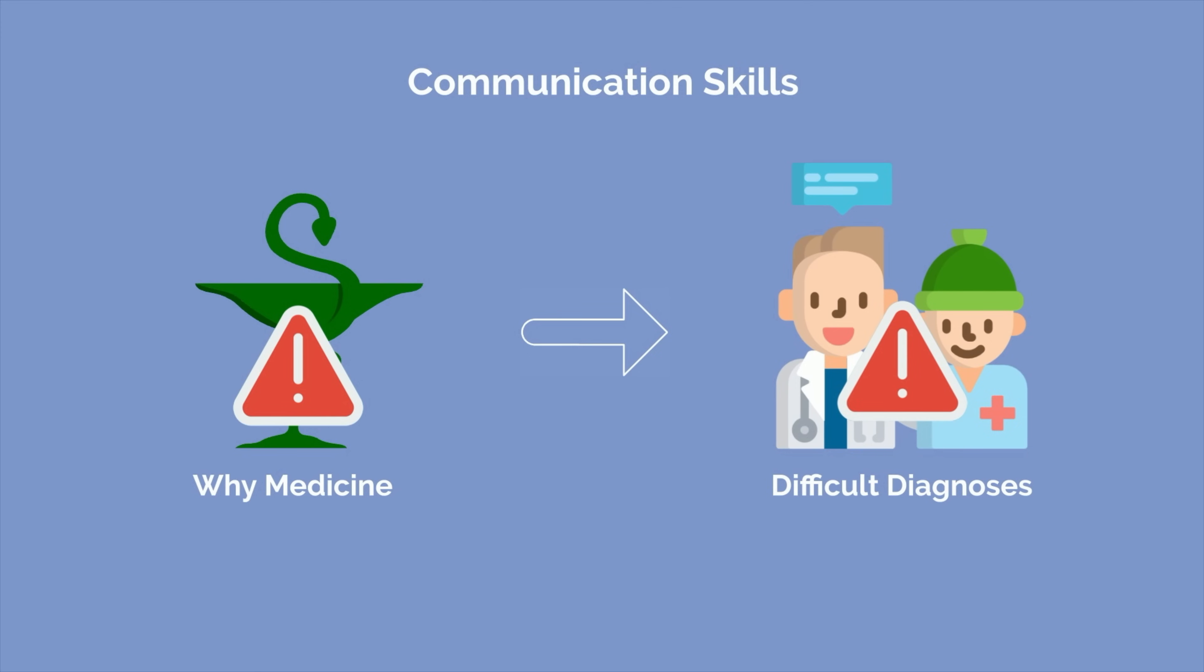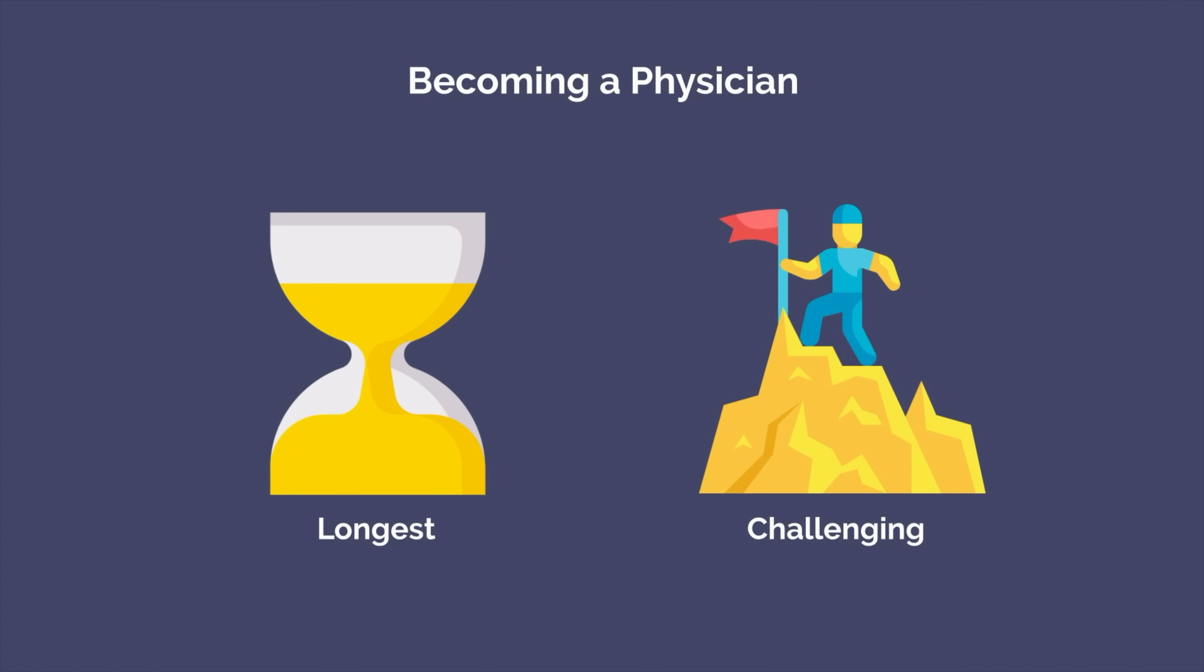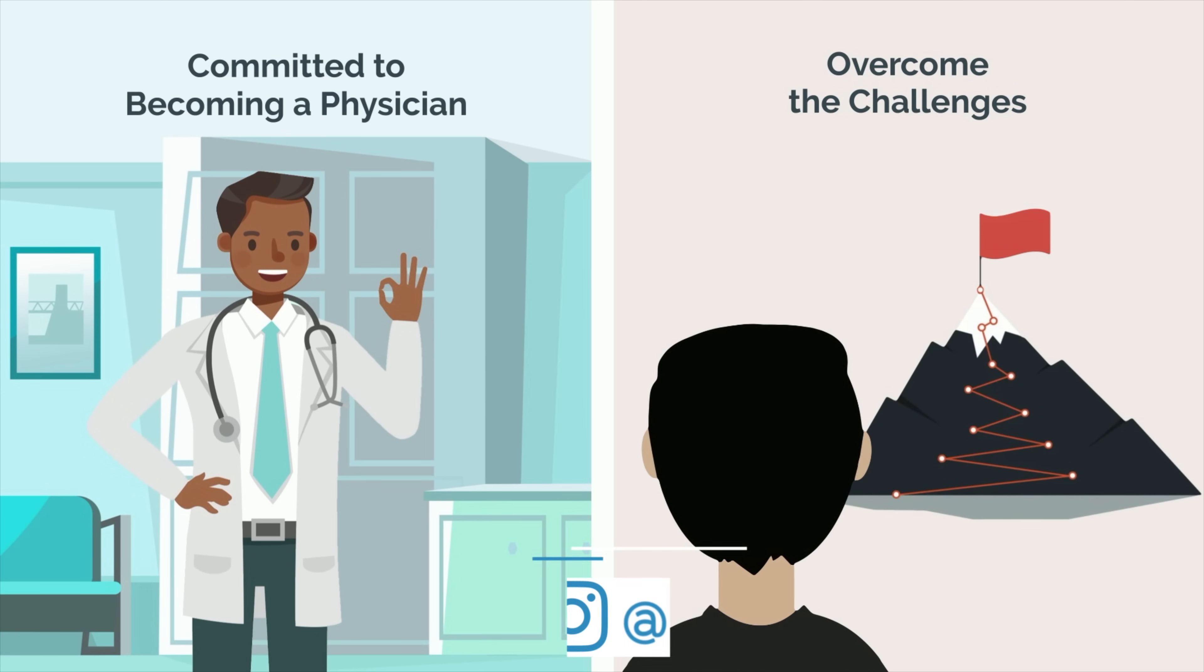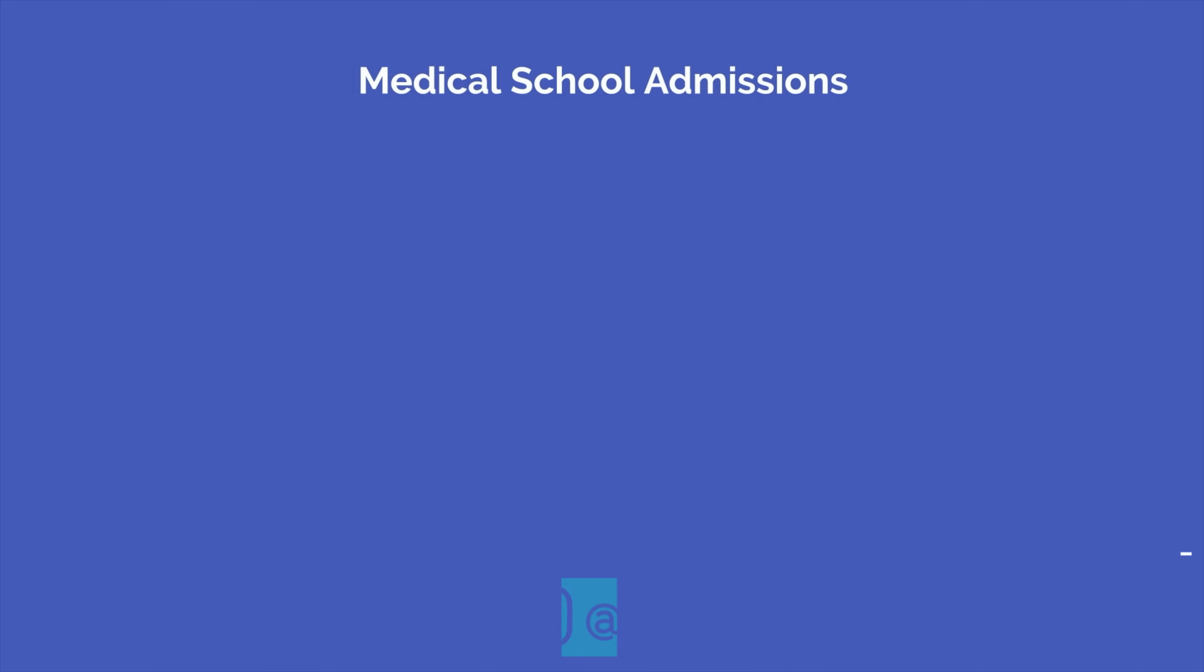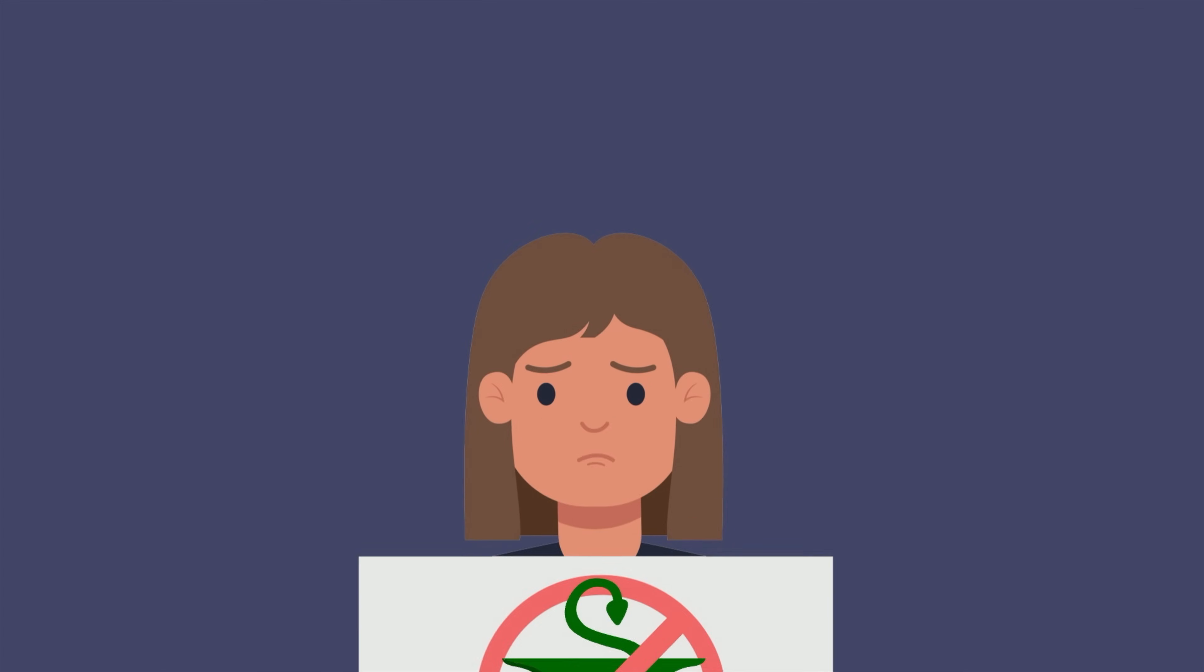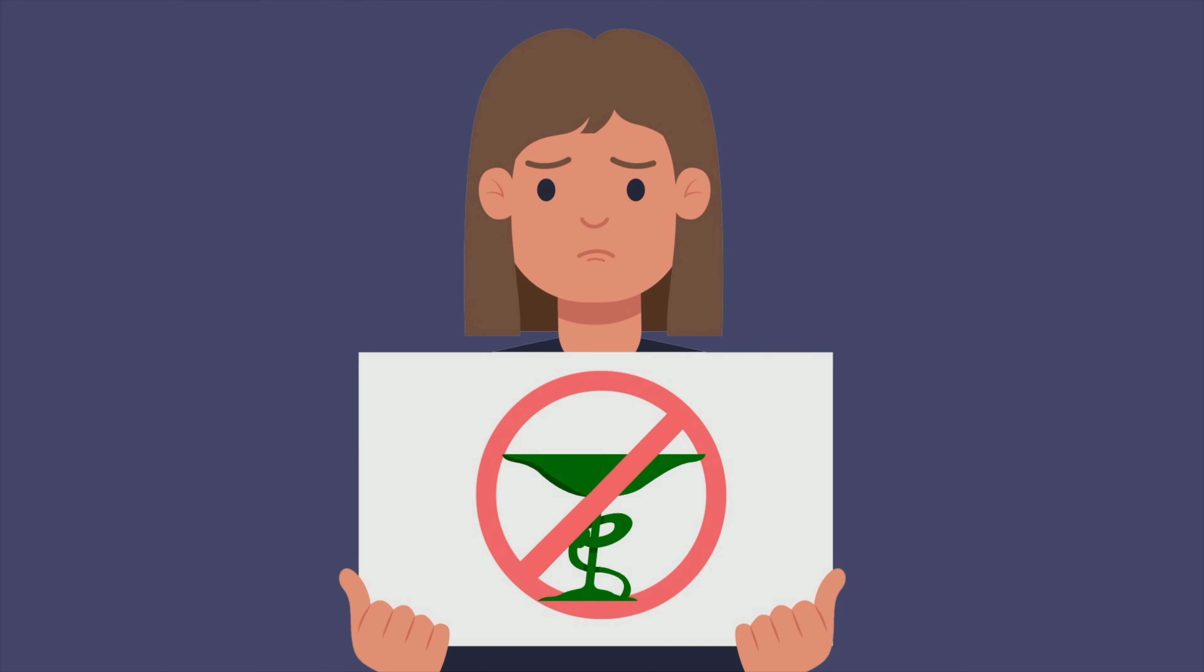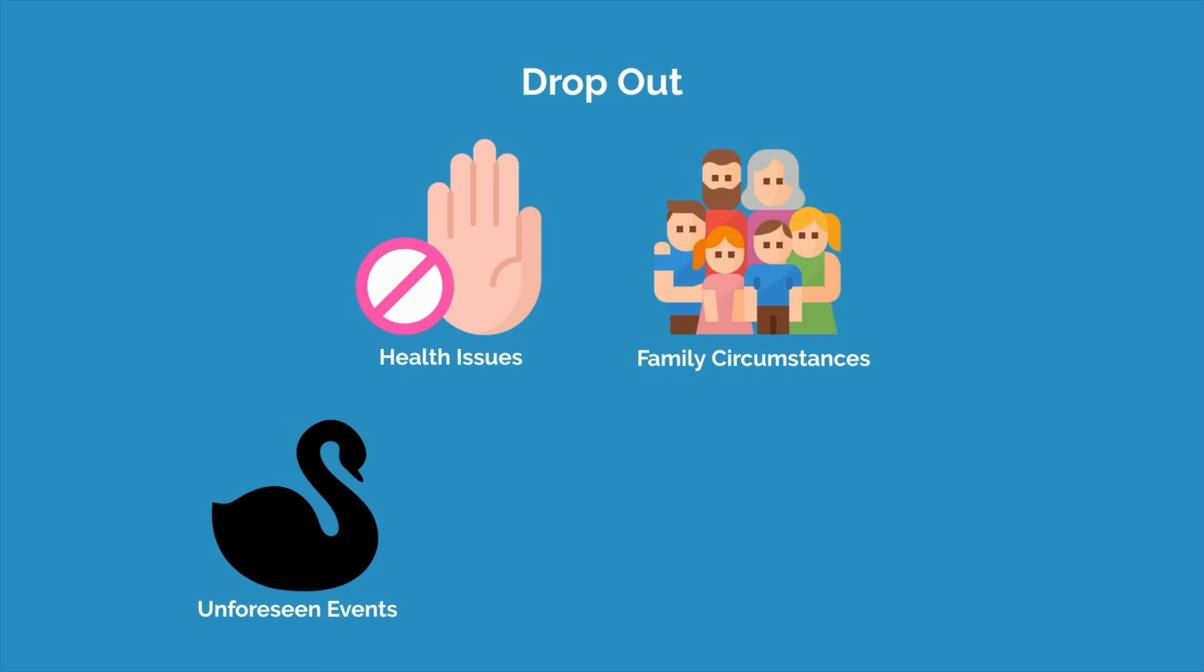Another thing that interviewers are looking for is your commitment to medicine. Becoming a physician is one of the longest and most challenging career paths that you can choose. Admissions committees want to make sure that you are committed to becoming a physician and are willing to overcome the challenges ahead of you. Part of the reason that medical school admissions are so rigorous is that medical schools want to make sure that they're accepting students who will ultimately graduate and become practicing physicians. Although getting into medical school is no easy feat, there are still some students who don't end up completing medical school. Some drop out due to health issues, family circumstances, or other unforeseen events. Others drop out because they are unable to handle the rigors of medical school or decide that they no longer want to become a doctor.